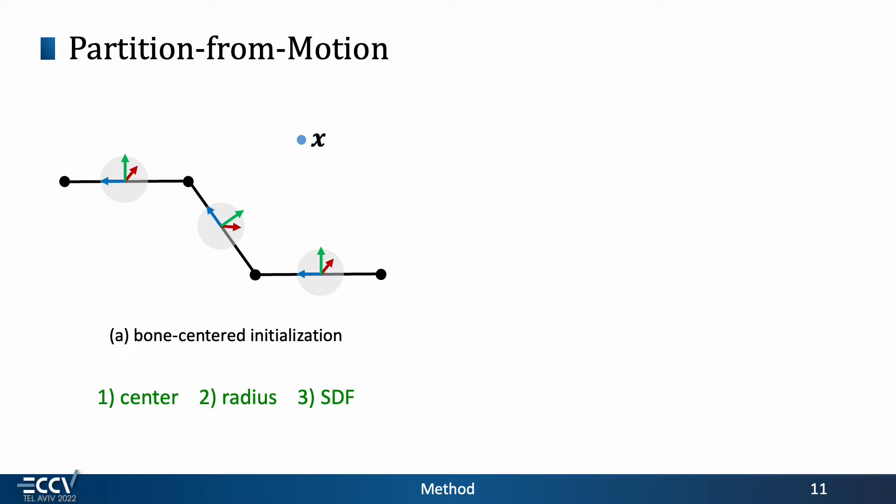Therefore, we initialize each part into a small sphere at the center of a bone. Then, parts are not intersected, and the SDF of a part approximately equals the distance to the bone center. This ensures that most points are assigned to the right part when training begins.